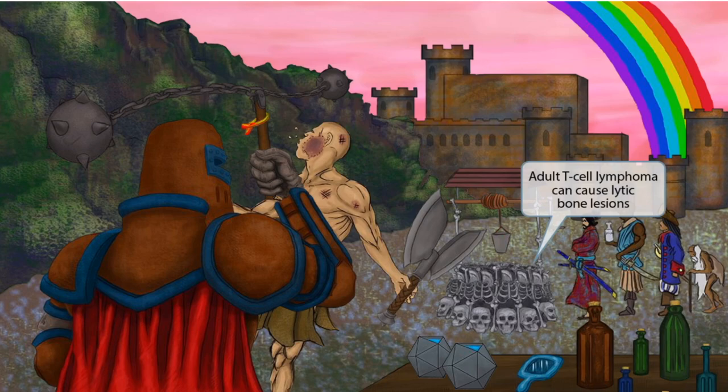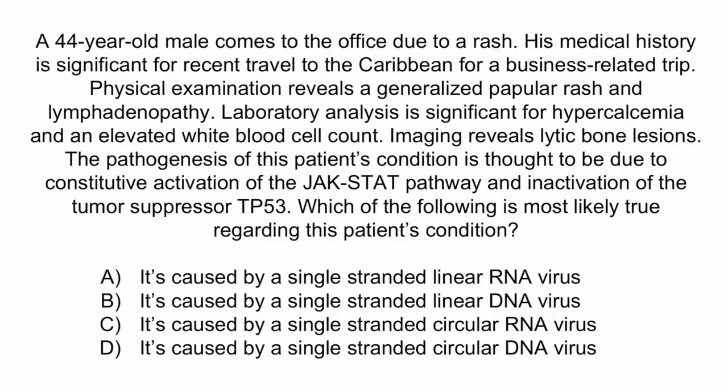Now let's review with a question. A 44-year-old male comes to the office due to a rash. His medical history is significant for recent travel to the Caribbean for a business-related trip. Physical examination reveals a generalized papular rash and lymphadenopathy. Laboratory analysis is significant for hypercalcemia and an elevated white blood cell count. Imaging reveals lytic bone lesions. The pathogenesis of this patient's condition is thought to be due to constitutive activation of the JAK-STAT pathway and inactivation of the tumor suppressor TP53. Which of the following is most likely true regarding this patient's condition?